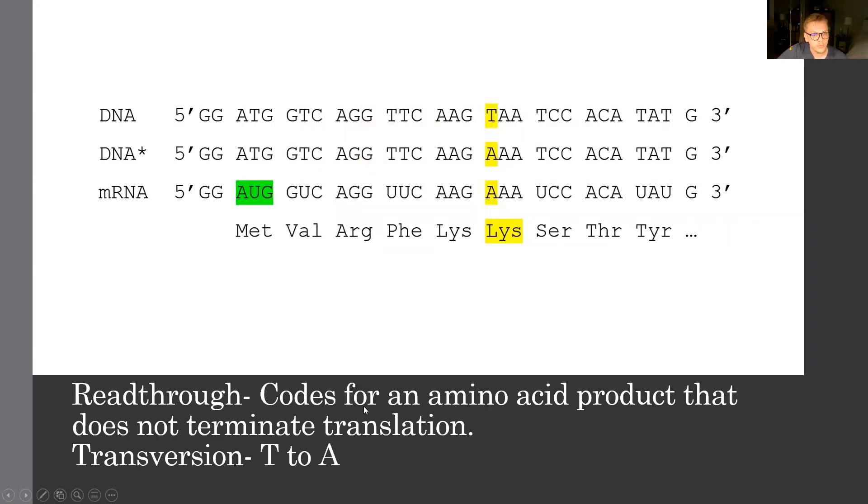Not least we have a readthrough. And this is when we have a codon that codes for an amino acid product that does not terminate translation. So previously, this was our stop codon, but we're going to have a transversion that occurs. This is T to an A. This is then translated into lysine. And we can see that without that stop codon, we're just going rampant here and producing all sorts of amino acids that we shouldn't be producing.